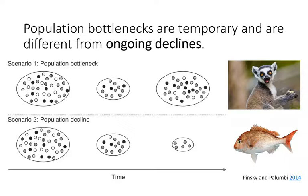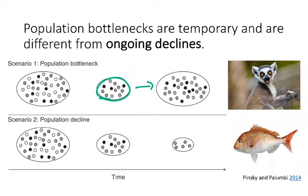Lastly, to differentiate a bottleneck from a continuous ongoing decline: in a population bottleneck, as shown at the top, we have a temporary reduction — bottlenecks are temporary. Using the lemur Madagascar example, there was a temporary reduction in population size and some loss of genetic diversity, but through time, as individuals on Madagascar thrived and produced large populations, we again see a return to a large population size with a lot of genetic diversity.